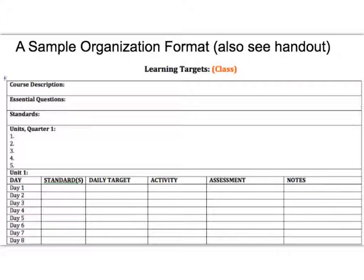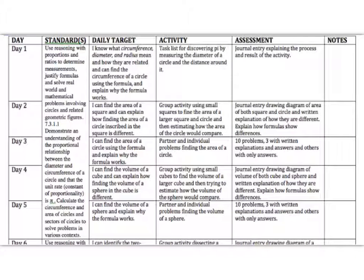Remember that your daily target or objective is going to be more narrow than the standard — the standard is more broad. So a standard might be the same for several days, but the learning target will be different, the activity will be different, and the assessment will be different. Take a minute and read this filled-in chart. Think about how well planned you would feel if you knew this is what you were trying to accomplish. Notice that the standards are the same for all five days, but each day has its own learning target, its own activity, and its own assessment.